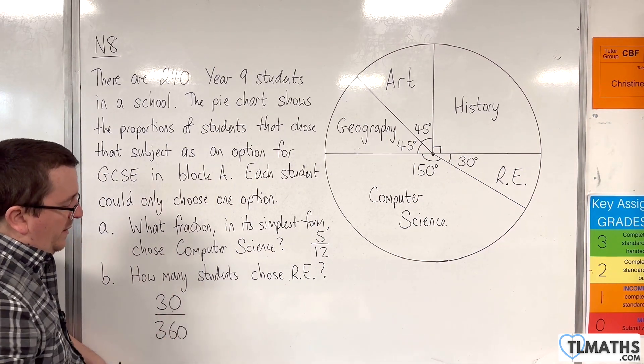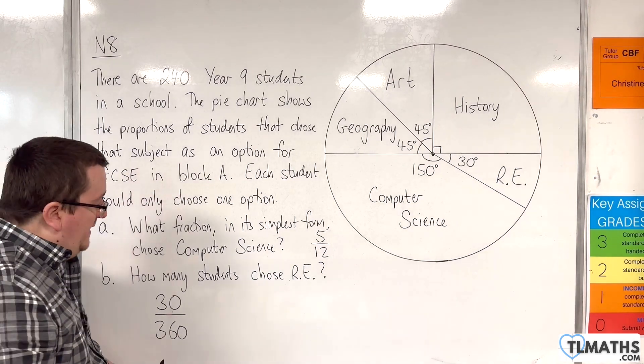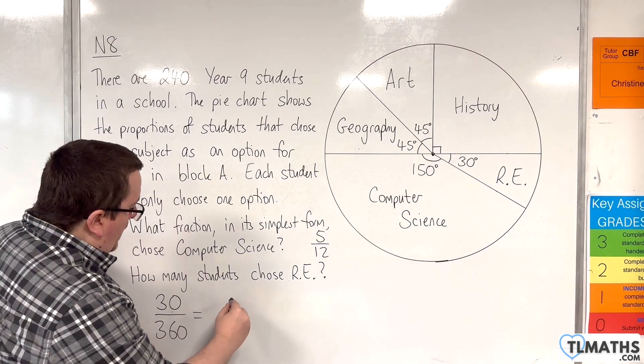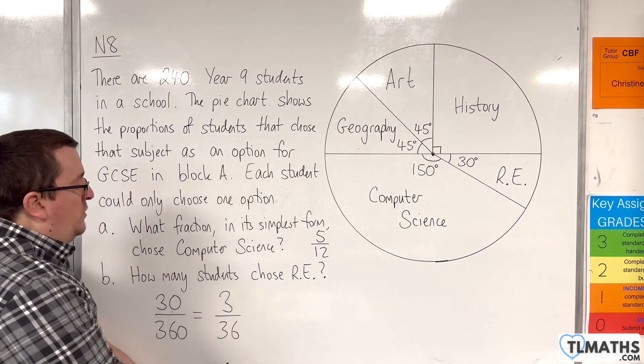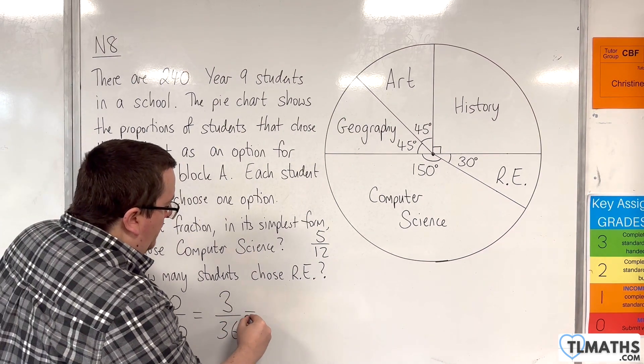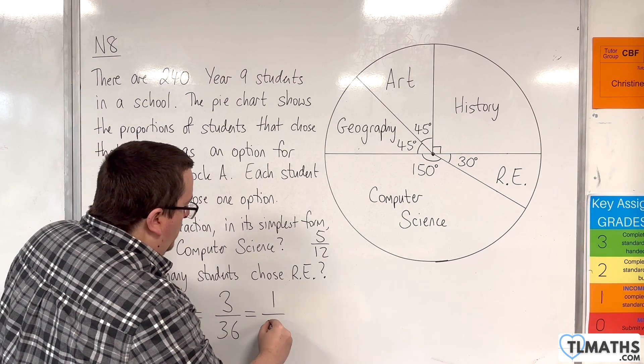Both the numerator and denominator can be divided through by 10, and that gets us 3 over 36. Both of those are in the three times table, so divide top and bottom by 3, we get 1 over 12.